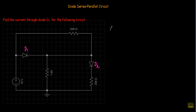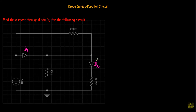In this video I will show you two examples in which diodes will be connected in series-parallel structure. This is our circuit structure. In the circuit we have a source of 10V, two diodes D1 and D2. We have to calculate the current through diode D2.